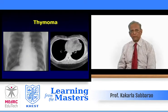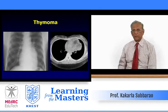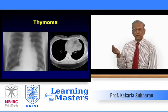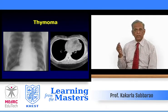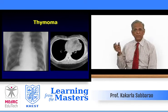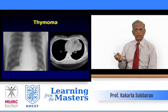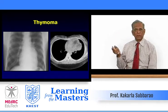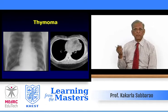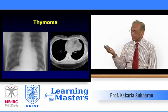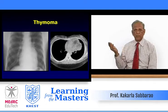Thymoma: if you take a PA of the chest, you can say it is in the anterior mediastinum because of the so-called silhouette sign. The silhouette sign means any mass that obscures the cardiac border, particularly the superior or inferior cardiac border, must be in the anterior mediastinum. You don't have to take a lateral — it confirms the mass is in the anterior mediastinum.